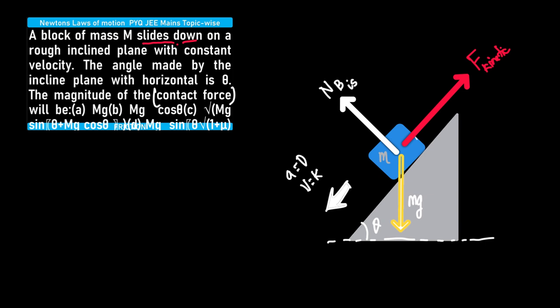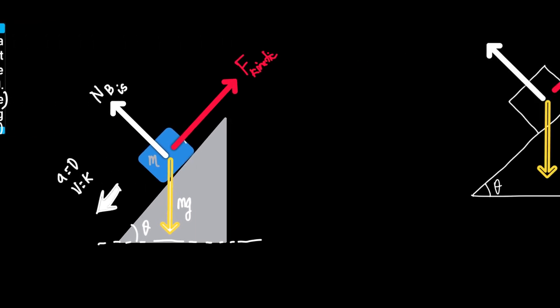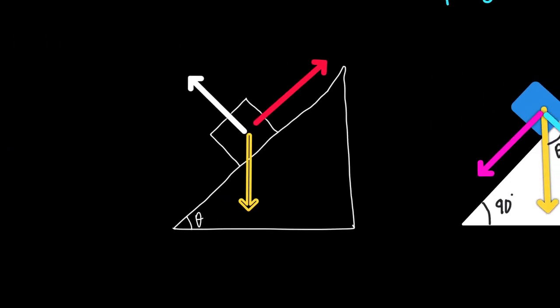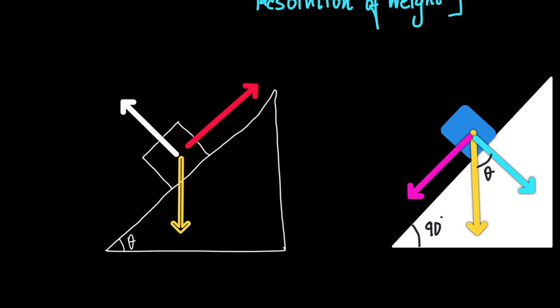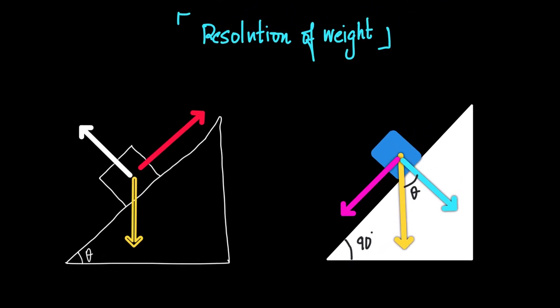it would be kinetic friction. Now let's go into these forces one by one, starting with weight. We will resolve weight into two components: one will be the component parallel to the inclined surface (wx), and the other will be the perpendicular component (wy).